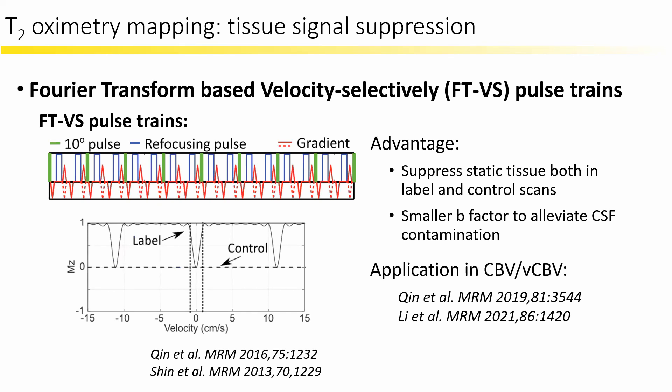Dr. Xin and Qing also developed a Fourier transform-based velocity selective pulse train (FT-VAS). This pulse is divided by a 90-degree suppression pulse into 10-degree pulses, between which velocity-sensitive gradient modules are inserted. For static tissue, this acts as just a 90-degree suppression pulse, but for flowing spins the velocity-sensitive module generates a phase shift to prevent efficient suppression. This approach suppresses tissue signal in both label and control scans, decreases tissue noise, and has smaller b-factors that reduce CSF contamination. This FT-VAS sequence has been used in our CBV and vCBV measurements.